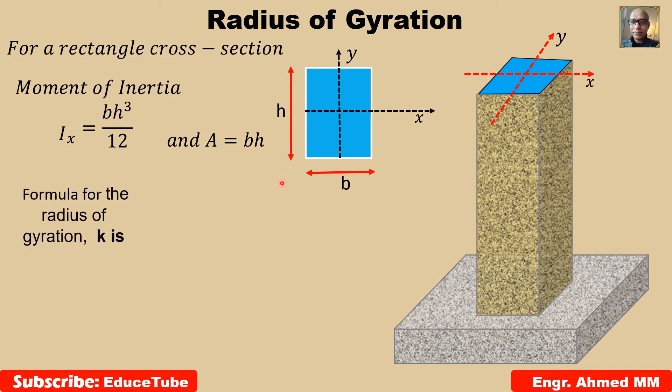So, formula for the radius of gyration, what we have found in previous slide, it is moment of inertia divided by A and then square root.